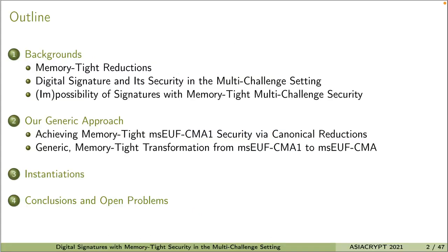In this talk, I will first provide some background knowledge about memory-tight reductions and digital signatures. I will also talk about security of digital signatures in the multi-challenge setting. Then I will recall some impossibility results in getting memory-tight digital signatures in this setting. In the second part, I will talk about how we circumvented these impossibility results. Our approach can be divided into two steps. In the first step, we achieve a weak memory-tight security in the multi-challenge setting, which we call MSUF-CMA1 security, by the help of a special kind of reductions called canonical reductions. In the second step, we propose a generic and memory-tight transformation from MSUF-CMA1 security to MSUF-CMA security. Next, I will talk about the instantiations of our approach and compare them with existing schemes. Finally, I summarize our work and raise some interesting open problems.